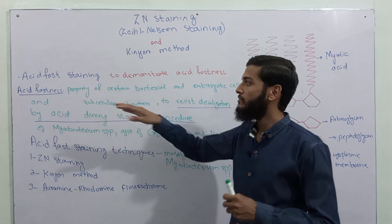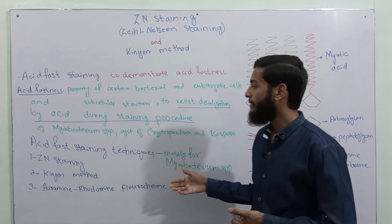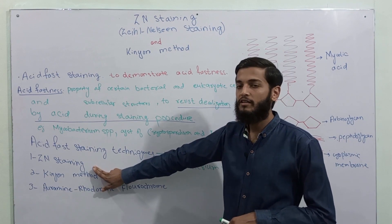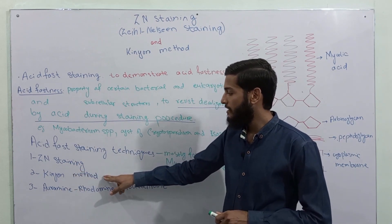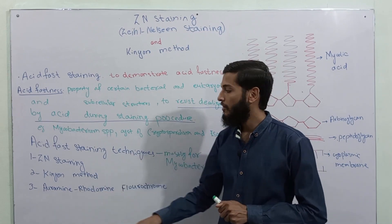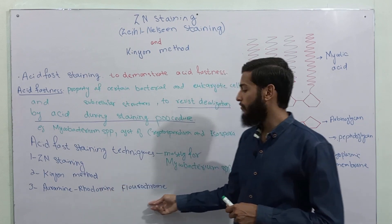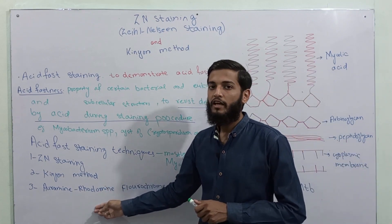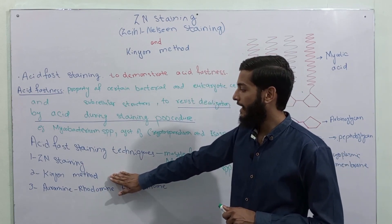Acid fast staining techniques are performed to demonstrate acid fastness. There are three methods: the first is known as Ziehl-Neelsen staining method, also written as Zedden staining. The second method is known as the Kinyoun method, also called cold Zedden method. The third method is known as auramine-rhodamine fluorescent staining technique, also known as auramine phenol staining. In this video we will be talking about Ziehl-Neelsen and Kinyoun methods.